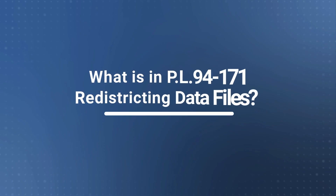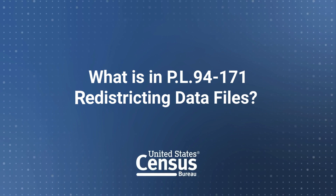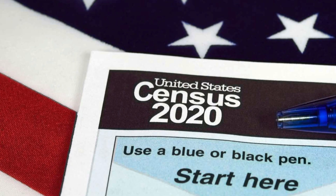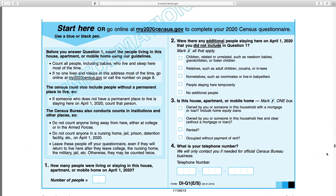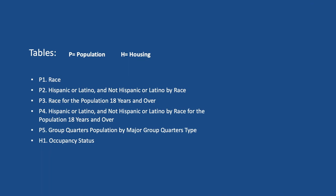What is in the PL 94-171 redistricting data files? The PL 94-171 data were derived from questions asked on the 2020 Census Questionnaire. Let's take a look at the PL 94-171 redistricting data file topics you can access. The redistricting products contain summary statistics on population and housing subjects. The six tables that will be available to you are as follows.